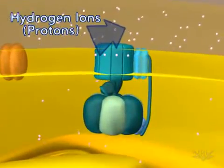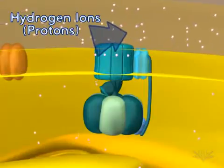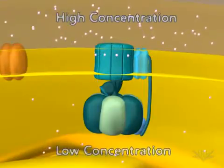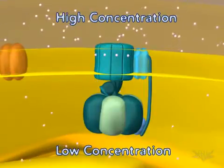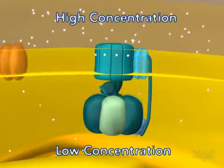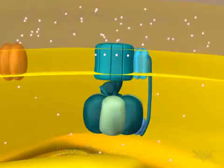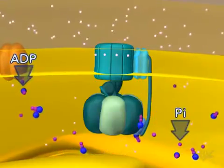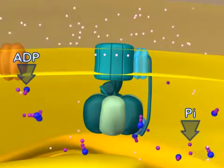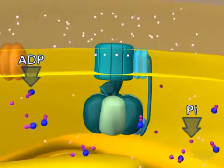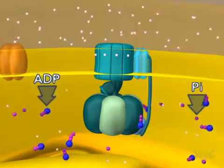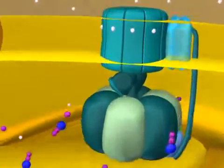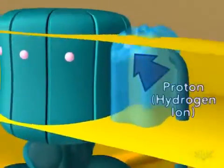Notice the large difference in the number of hydrogen ions on the two sides of the membrane. This difference is a hydrogen ion, or proton, concentration gradient. The energy associated with this gradient is used to synthesize ATP from ADP and Pi. This occurs at the ATP synthase complex.